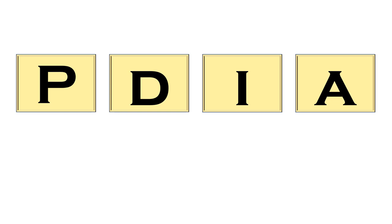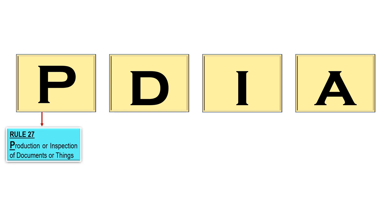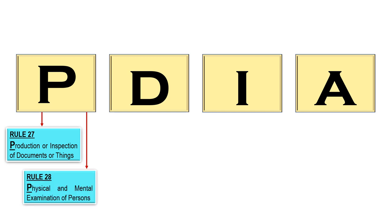So what is letter P? P stands for Rule 27 — the production or inspection of documents or things. Another P stands for the physical and mental examination of persons, that is Rule 28.